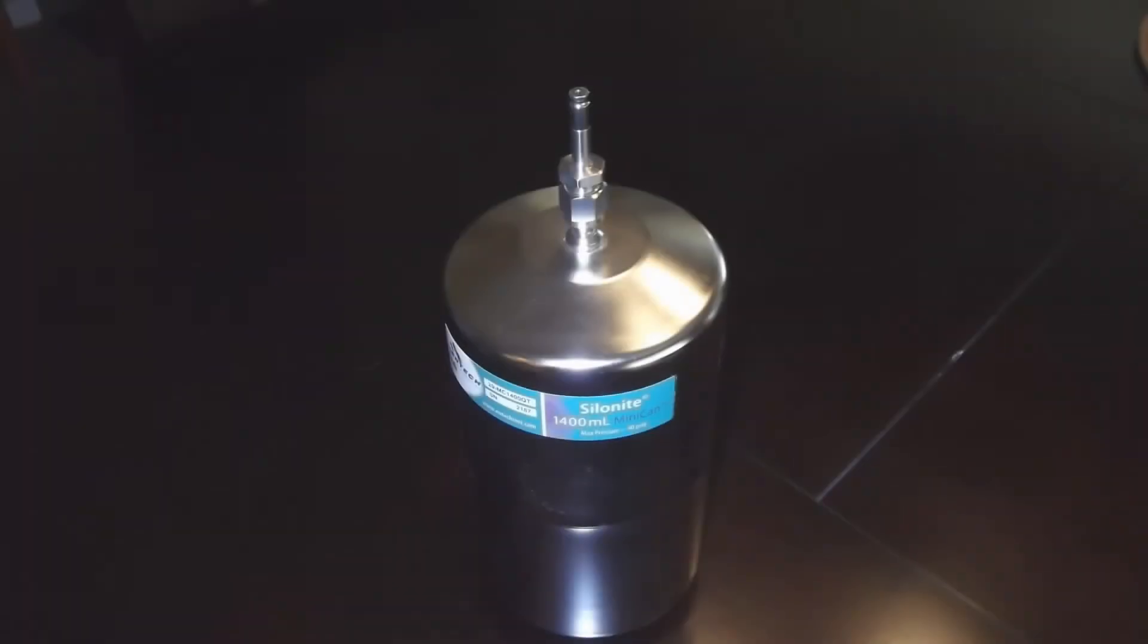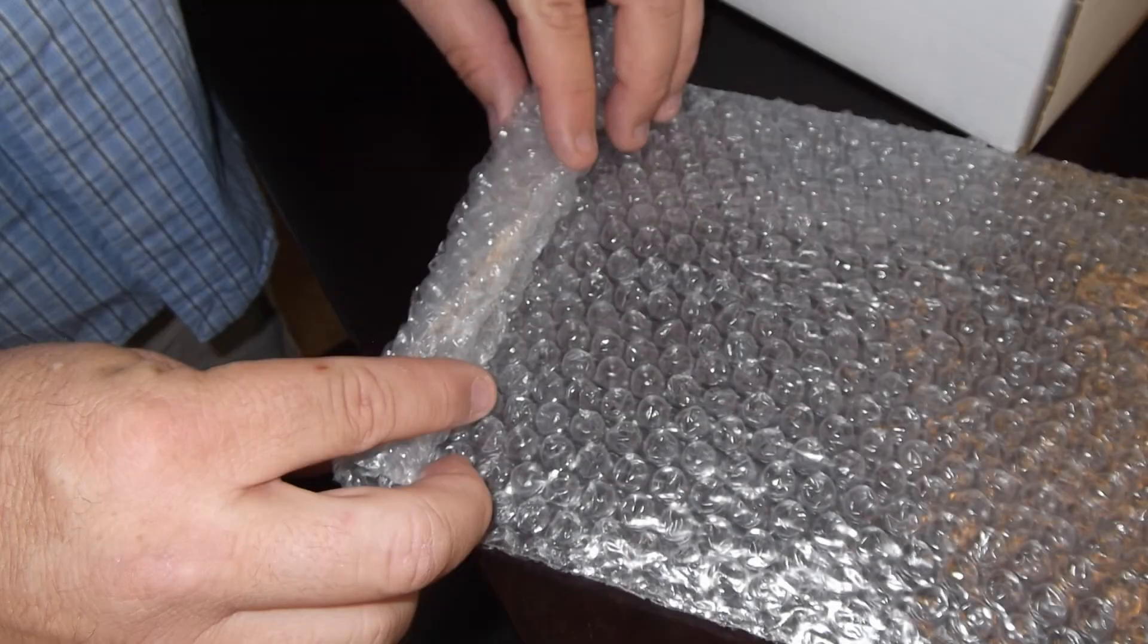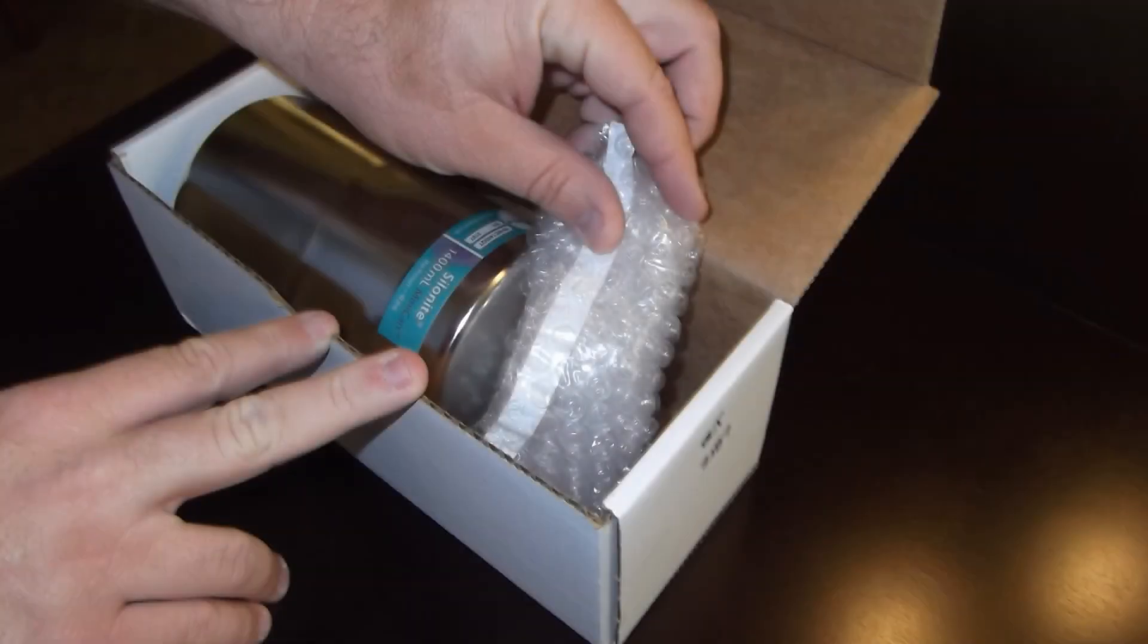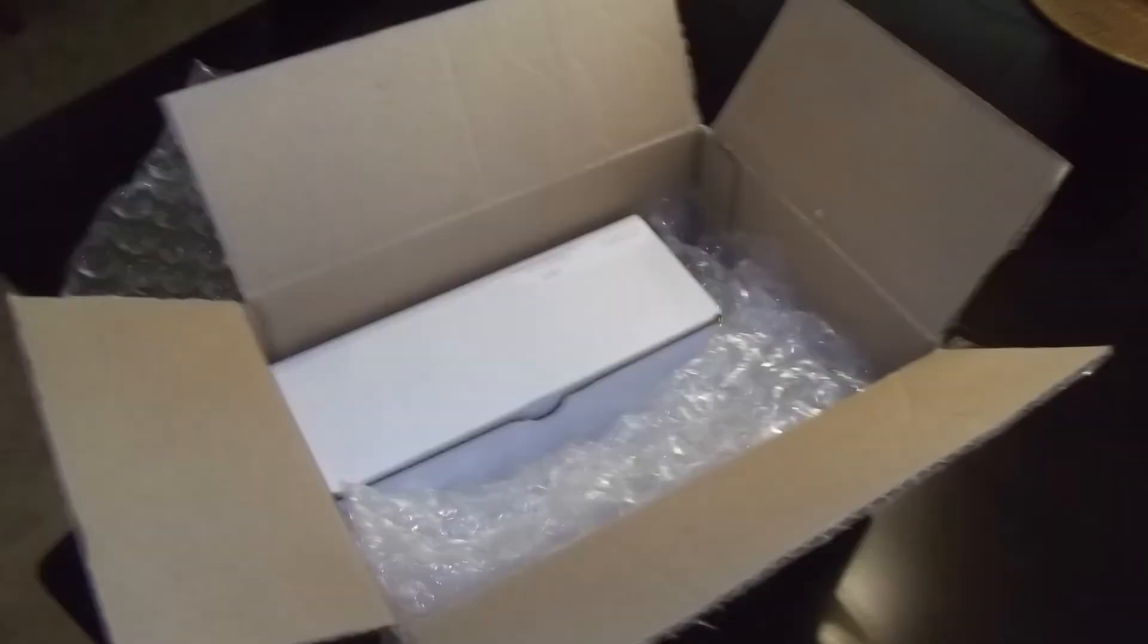Be sure to completely fill out a chain of custody form and place all of the materials back into the shipping packaging just as it was received. Put the chain of custody form into the box with the minican. It is now ready to be shipped to EMSL Analytical for analysis.